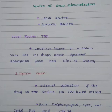Routes for drug administration are of two types: local routes and systemic routes. The local routes are used for localized applications at accessible sites and for drugs whose systemic absorption from these sites is lacking.